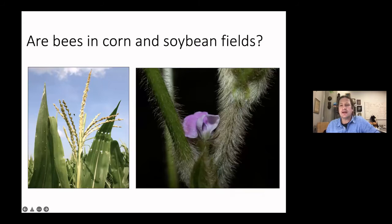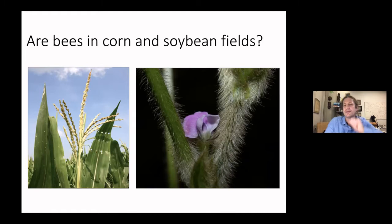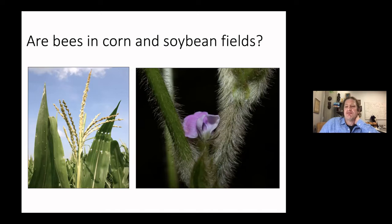That got me thinking about whether there are bees in corn and soybean fields when the business end of the plants is available. Corn tassels — even though corn is wind-pollinated — produce a ton of pollen, and if hungry enough, honeybees will visit. Soybeans have been bred for self-pollination but produce a ton of small flowers with pollen and nectar. Much of the honey in the Midwest is at least partially soybean honey, and beekeepers in the South like Mississippi actively seek out soybean fields to take advantage of that nectar flow.